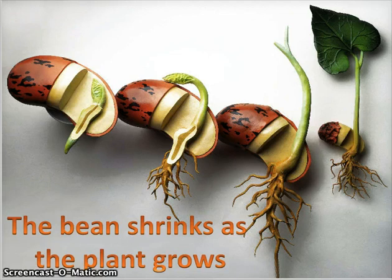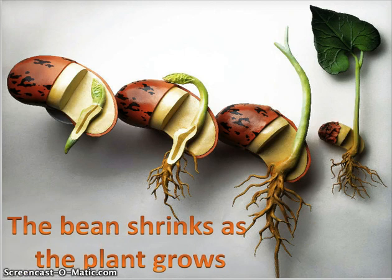So that is the plant life cycle — we start with just a seed and go all the way up to a grown adult. Hopefully you've learned something from this. Make sure you complete the Seesaw activity after you've watched this video. Hope you guys have a great day and keep on keeping on!